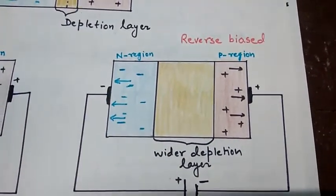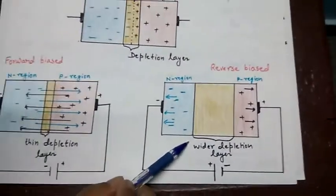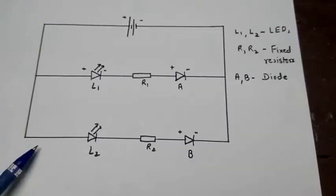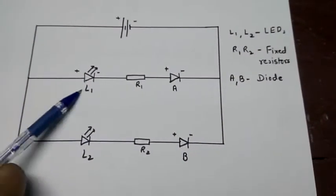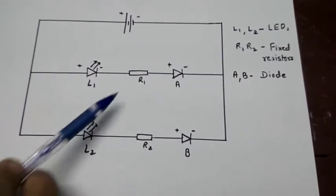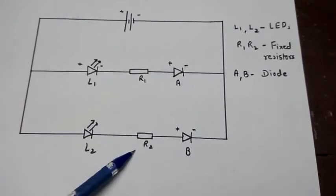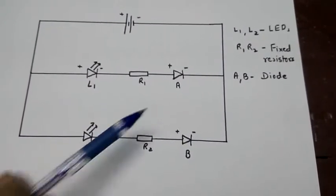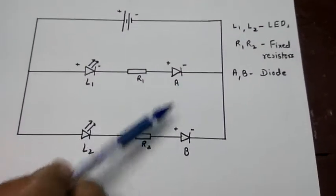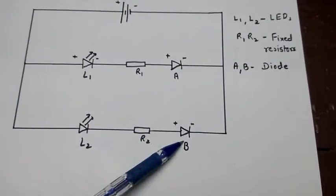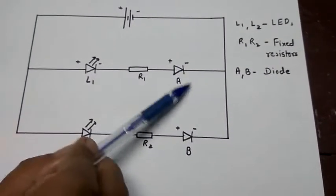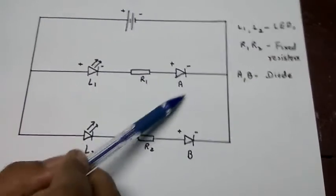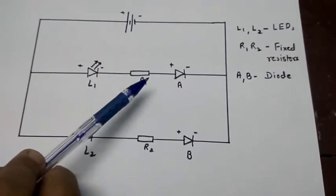Now we are going to observe forward biased and reverse biased with the help of an experiment. This is the circuit diagram I am going to use. L1 and L2 are LEDs, and R1 and R2 are fixed resistors. These are the two diodes A and B. Both diodes are connected in the same direction. Diode B will be fixed, but I will change the polarity of diode A to demonstrate forward biased and reverse biased.